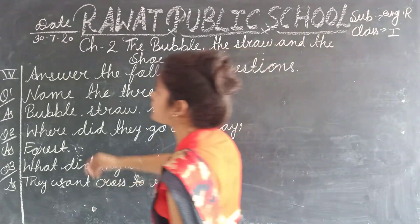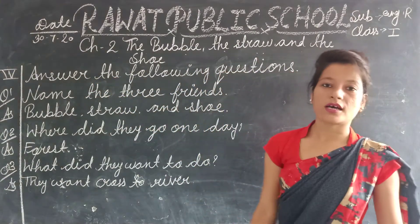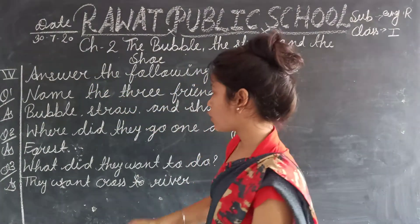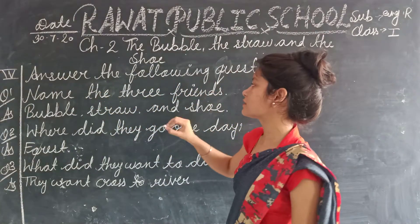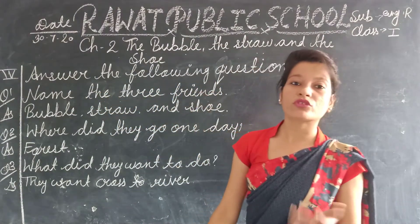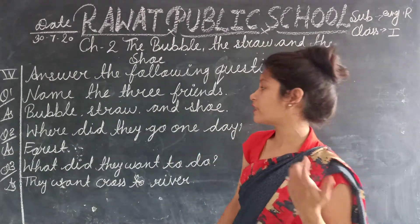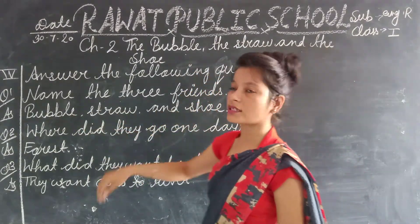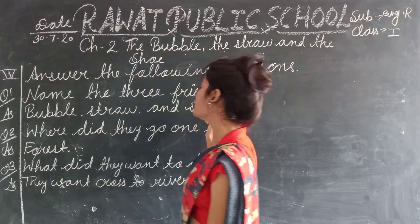Children, for your next exercise, please answer the following questions. Question number one: name the three friends. What are the three friends in the story? The answer is: Bubble, Straw and Shoe.